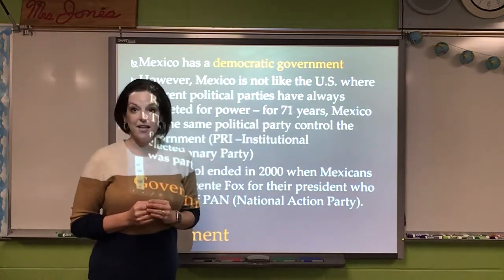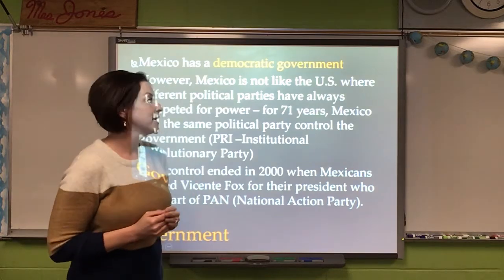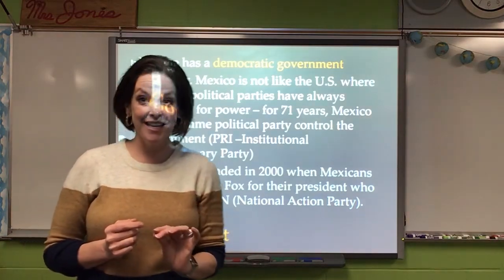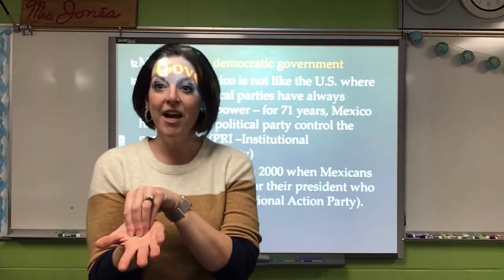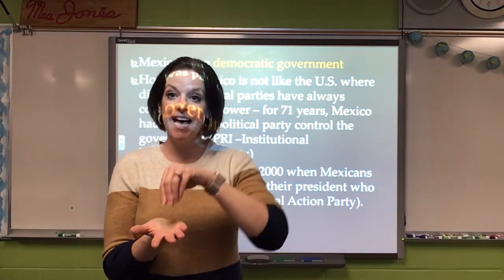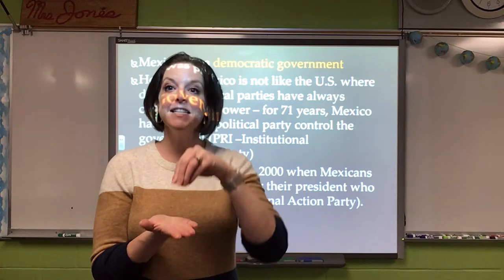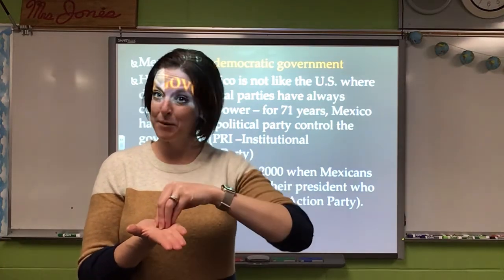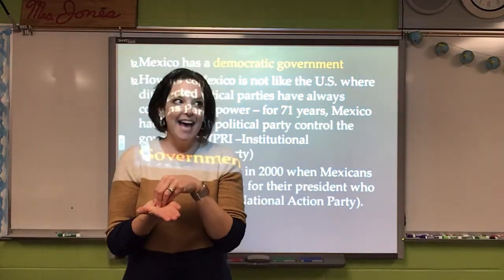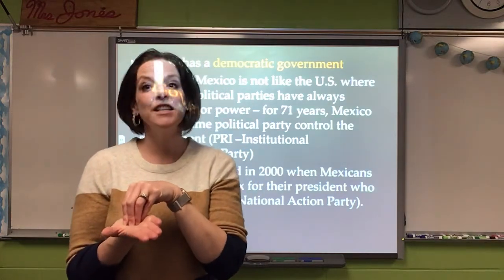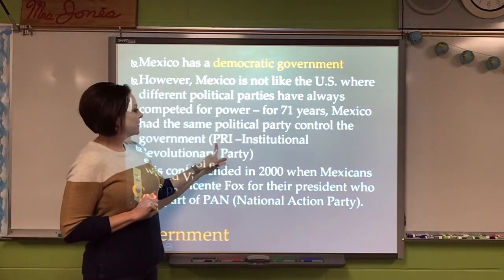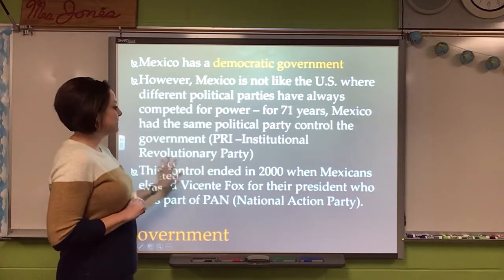For 71 years, Mexico had the same political party in charge. That's a long time — it would be like saying the United States had a Republican president, or a Democratic president, for 71 straight years. That's a really long time. That party was called the PRI — the Institutional Revolutionary Party. When you learn Spanish, the abbreviation is going to be backwards, so P-R-I.